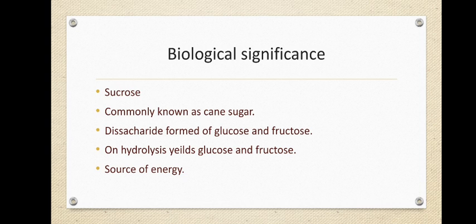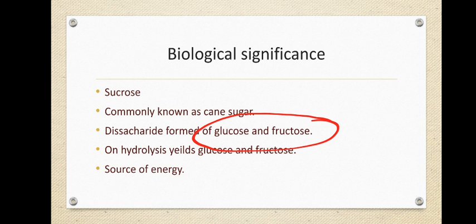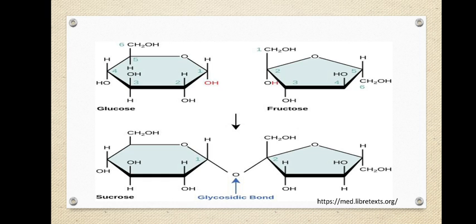Sucrose is commonly found in cane sugar and a wide range of naturally occurring sweet items like fruits. It is a disaccharide formed of glucose and fructose — in lactose the units are glucose and galactose, whereas here they are glucose and fructose. On hydrolysis it yields glucose and fructose, both of which can be used in energy production. When you eat sugar you get a large amount of glucose plus an equal amount of fructose, which can be used in glycolysis or gluconeogenesis.